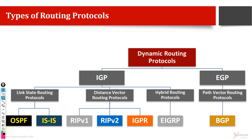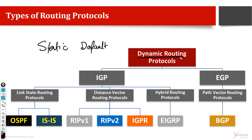There are many different types of routing protocols, but they are divided mainly into three categories. The first one is called static routing, in which we do the manual configuration. Then there is another type called default static routing, where we have a single destination. The third type is dynamic routing, which has many types of protocols on which it runs. Today we will discuss about different types of routing protocols.